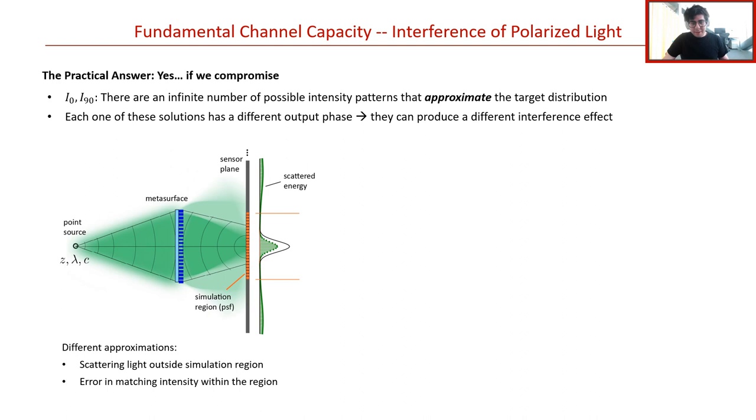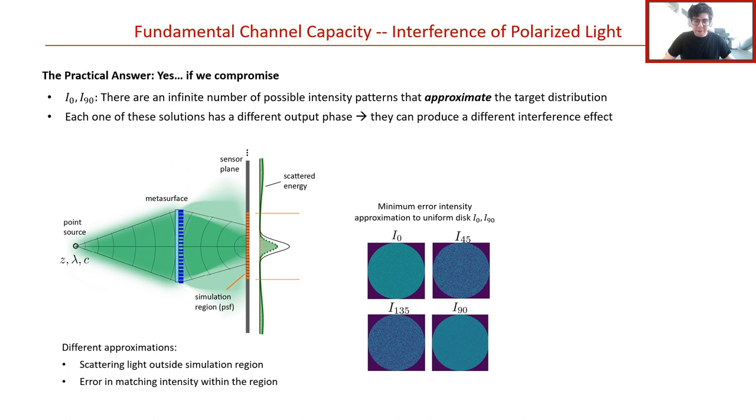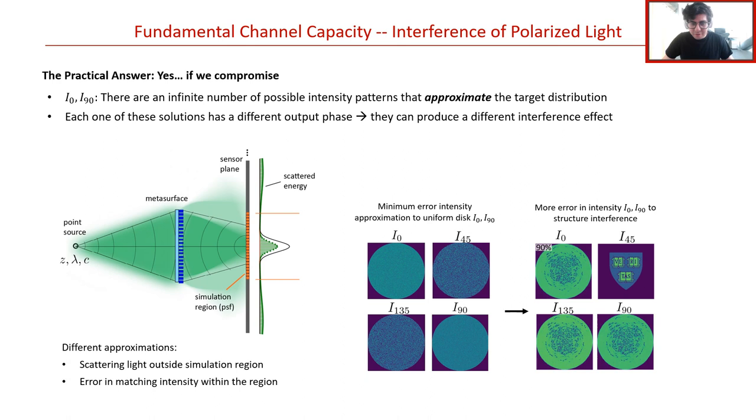We demonstrate these ideas in a simple task. Suppose we design a metasurface that produces a pair of intensities on two polarization states, I0 and I90, that will approximate a uniform disk of light in the simulation region with a minimum error. The results are shown here, and I45 and I135 then follow as a consequence by the interference of 0 and 90. Alternatively, let's now suppose that we also specify a target intensity for the 45-degree polarized light, the Harvard crest, in addition to the uniform disk target for 0 and 90-degree light. By simply allowing for approximation errors in I0 and I90, we could then structure I45 and obtain three engineered intensity patterns, as shown here.